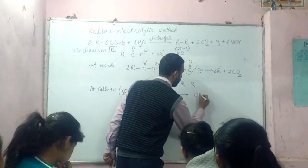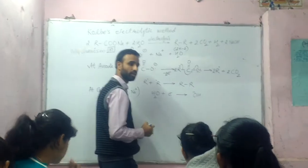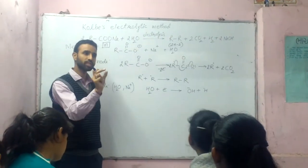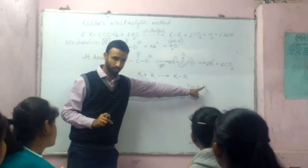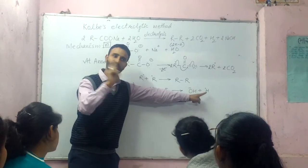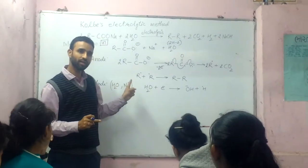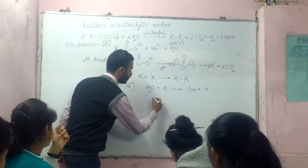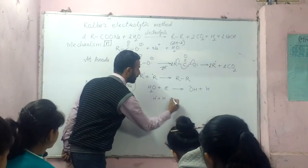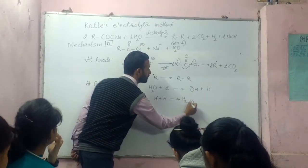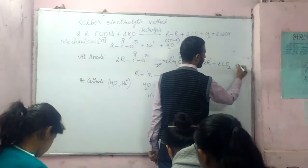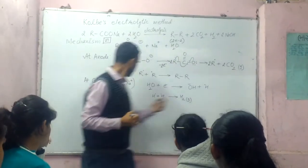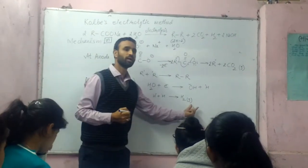We get OH⁻ as such along with hydrogen as a free radical. When H⁺ gains one electron, we get a hydrogen free radical. This hydrogen free radical is unstable, so it combines with another hydrogen free radical to give H₂ gas. At the cathode we get H₂ gas, and at the anode we get carbon dioxide gas.